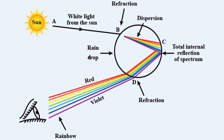Red light has the longest wavelength, a low frequency, and low energy — it undergoes the least refraction and therefore forms the upper arch of the rainbow. On the other side, violet light has the shortest wavelength, a high frequency, and high energy — it undergoes the most refraction and forms the lower arch of the rainbow. When light hits a water droplet, it is refracted and dispersed, then reflected on the other side of the droplet, and as the light moves out it is further refracted.